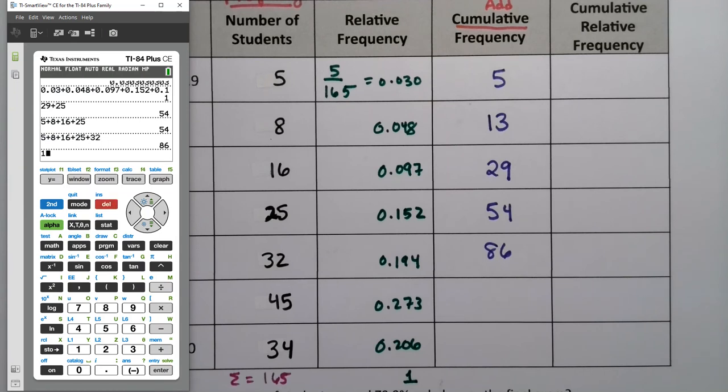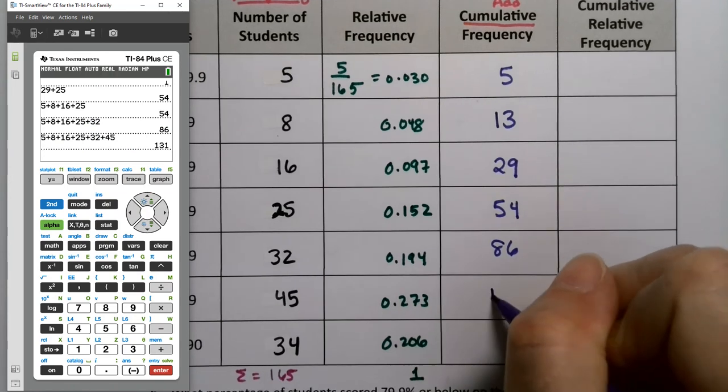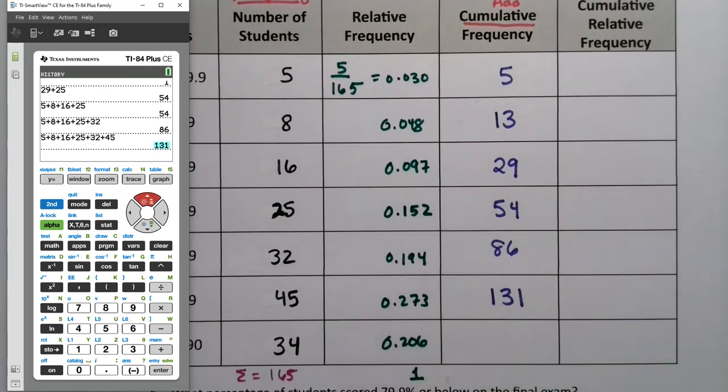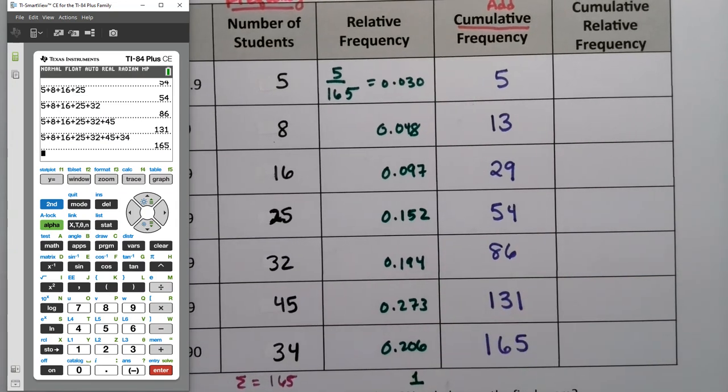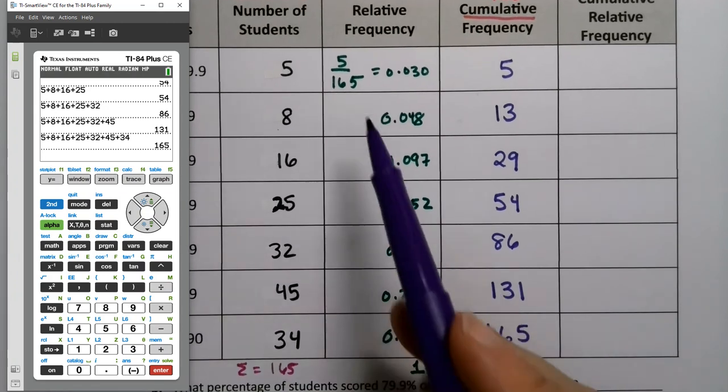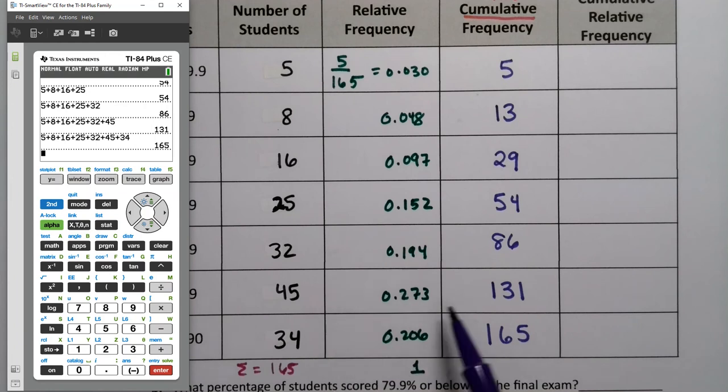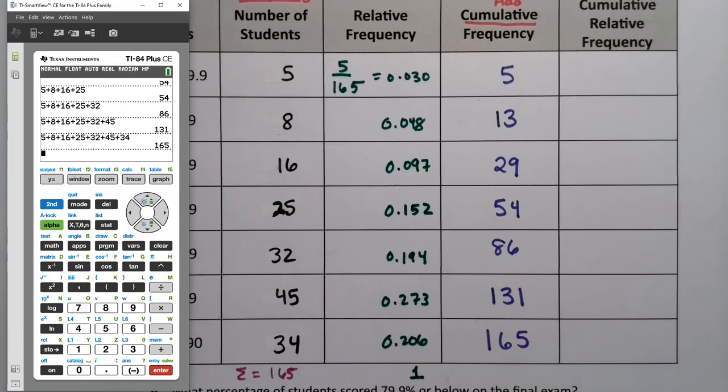Now I grab that thing again. Let me delete that out. Go grab it. Now I add to it 45. And it's 131. And then you do it again. One more time. And then you add to it a 34. Enter. And you get 165. They're your cumulative frequencies. So, you can either think of it as adding up all of these. Or the easy math way is to take this number plus 34 makes 165. 86 plus 45 makes 131. And so on. Easy peasy.